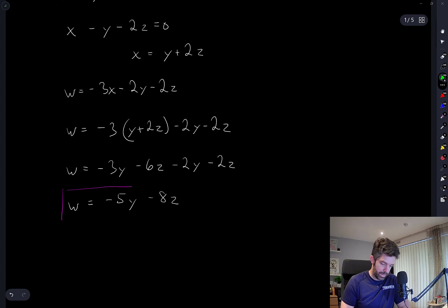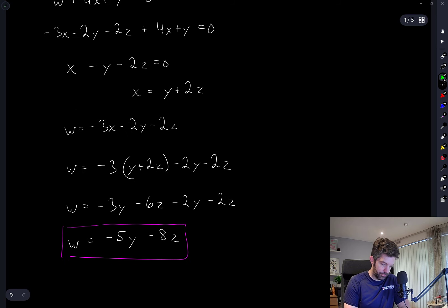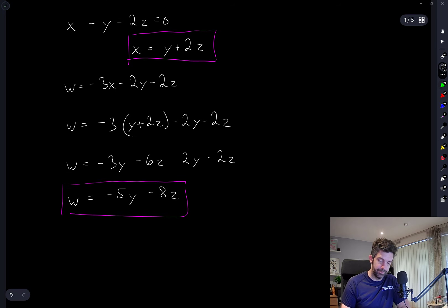Okay, so now what I have is I have both X and W in terms of only Y and Z. So I'm going to continue this and substitute things into the third equation. I should now be able to eliminate, if I take the third equation, I'll be able to eliminate both W and X from it.